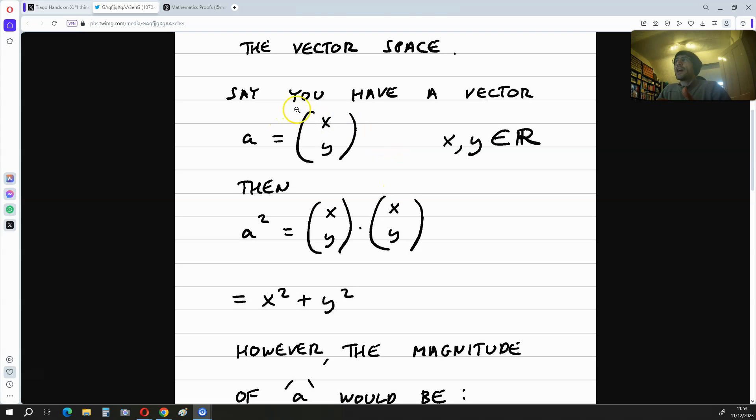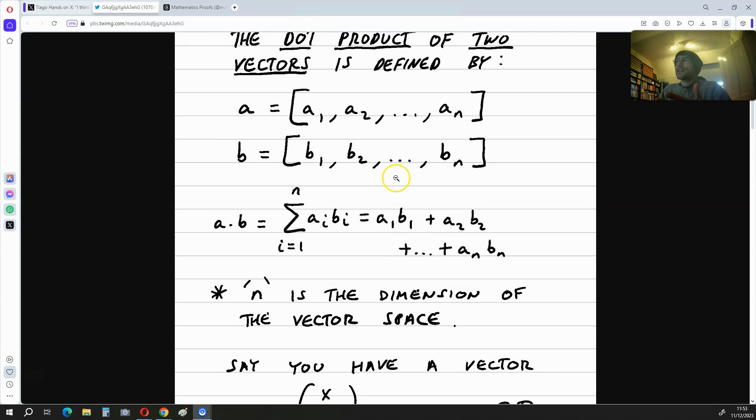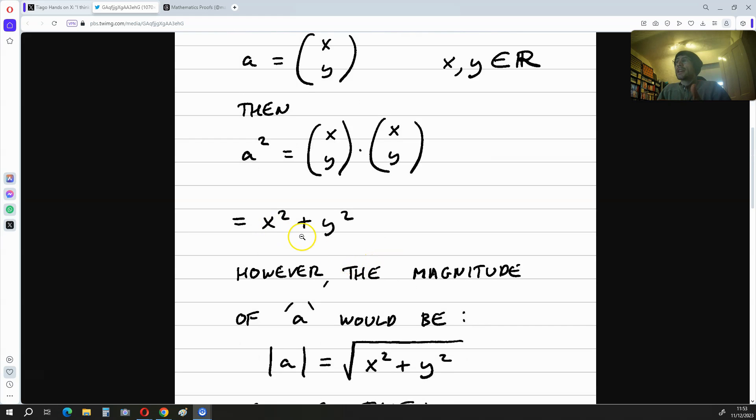Say you have a two-dimensional vector a, which is described by x, y, and x and y are elements of the real numbers. Then this is going to mean that a squared is x, y times x, y, and this is going to give us, according to our definition over here, x squared plus y squared.